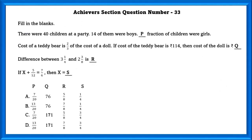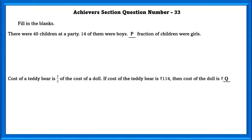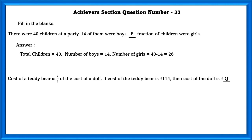Achieve section question number 33. Fill in the blanks, one by one. There were 40 children at a party; 14 of them were boys. P is the fraction of children who were girls. Total children = 40, number of boys = 14, so number of girls = 40 − 14 = 26. The fraction is 26/40, which reduces to 13/20, which equals p. Cost of a teddy bear is 2/3 of the cost of a doll.